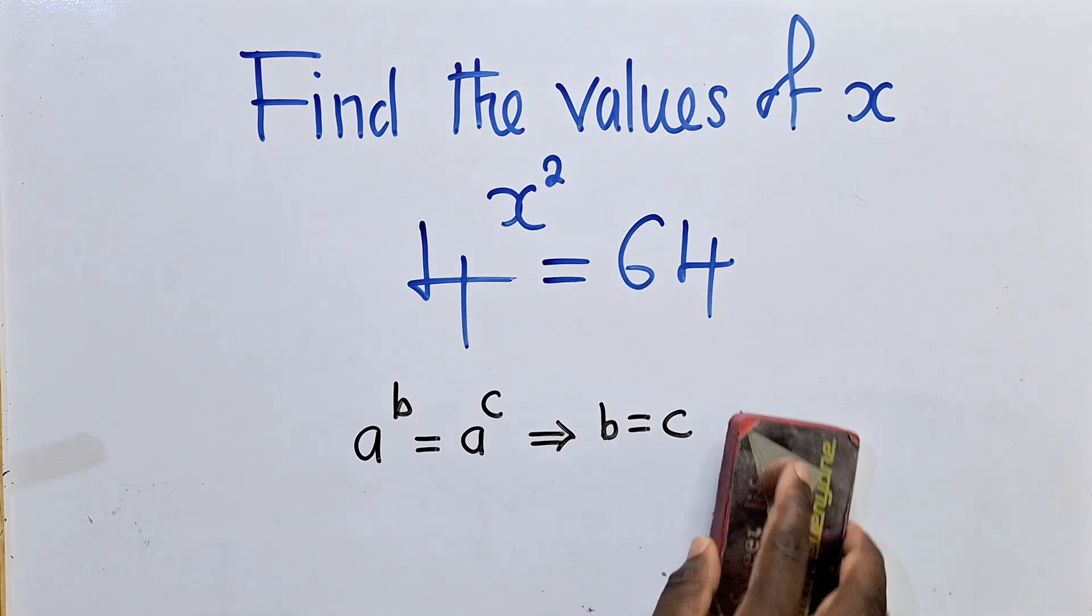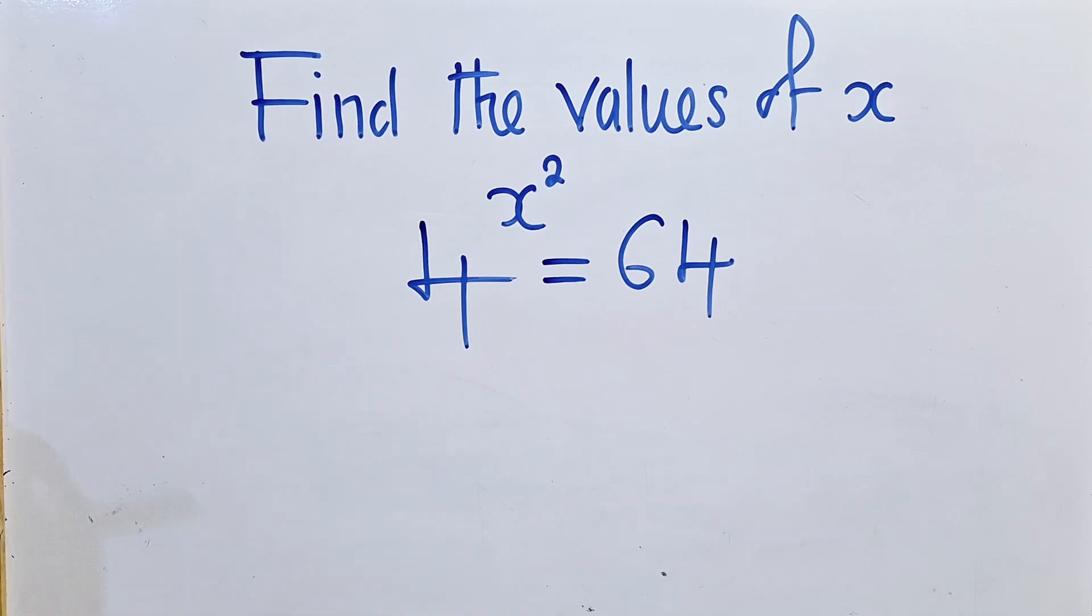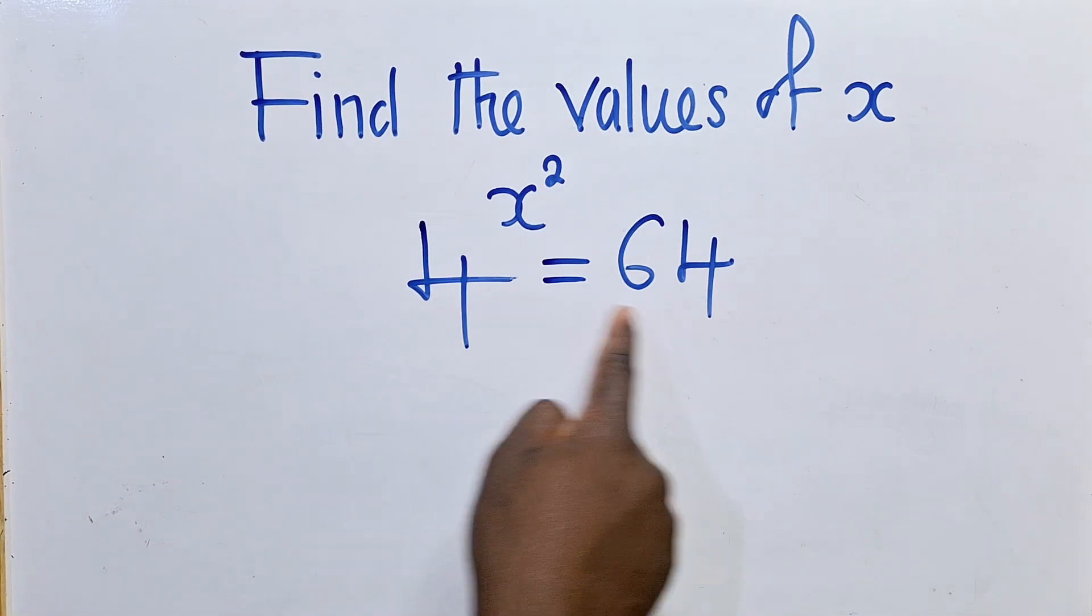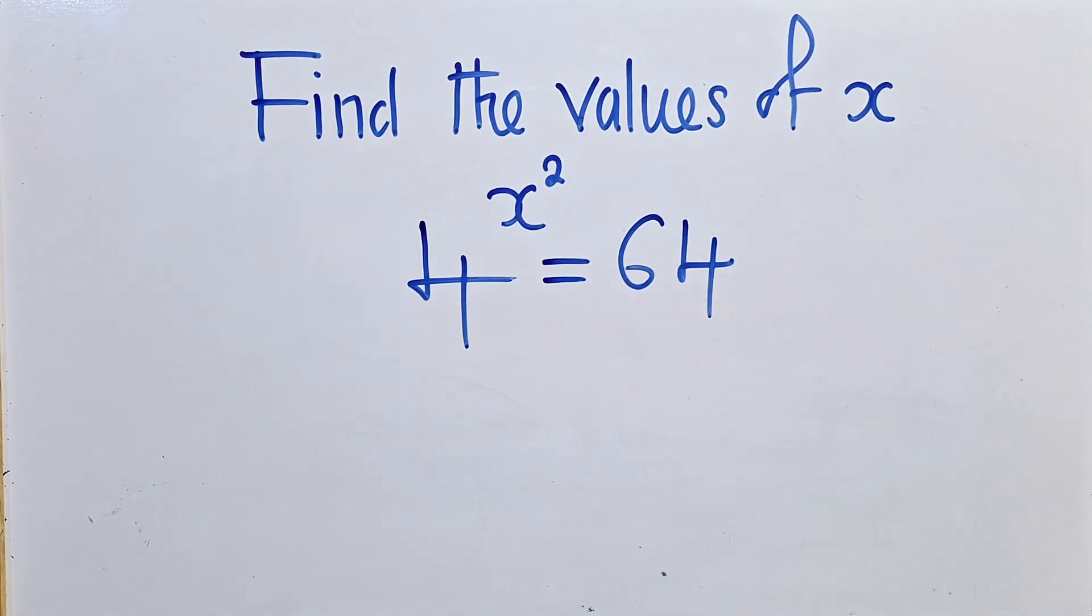So how do we apply this property? When we look at the base here and the base here, they are different. So we need to do what we call balancing the bases.